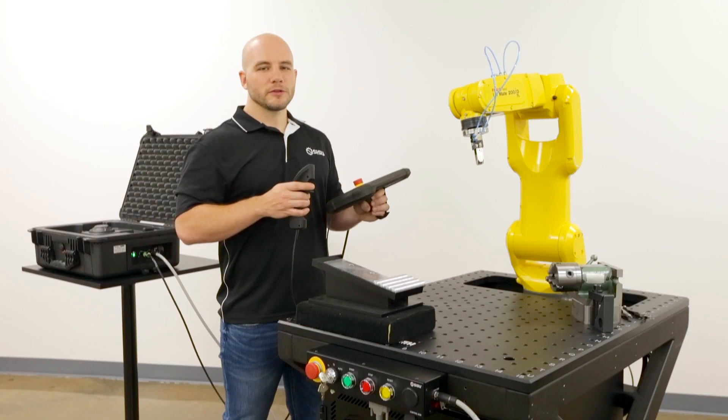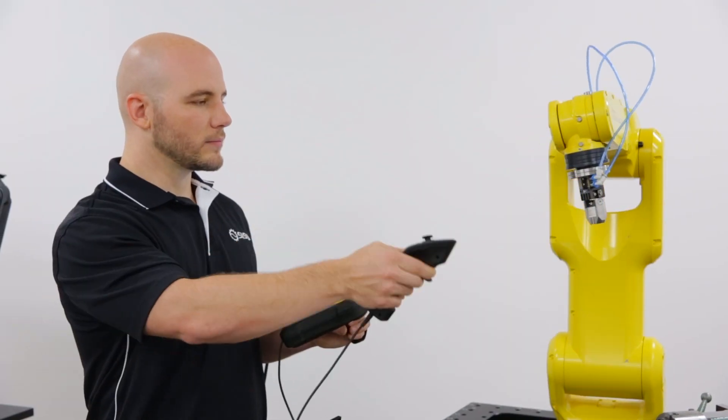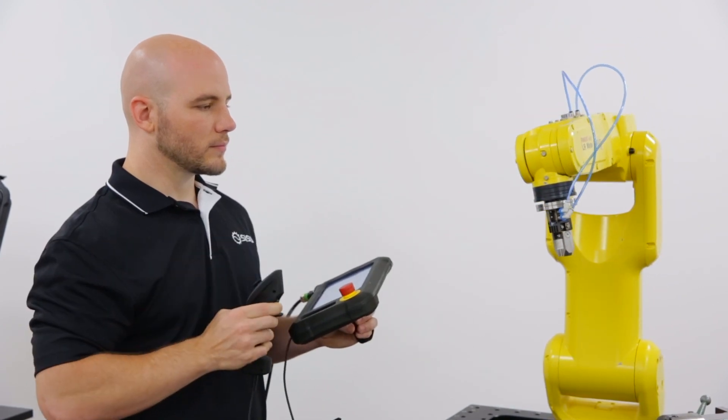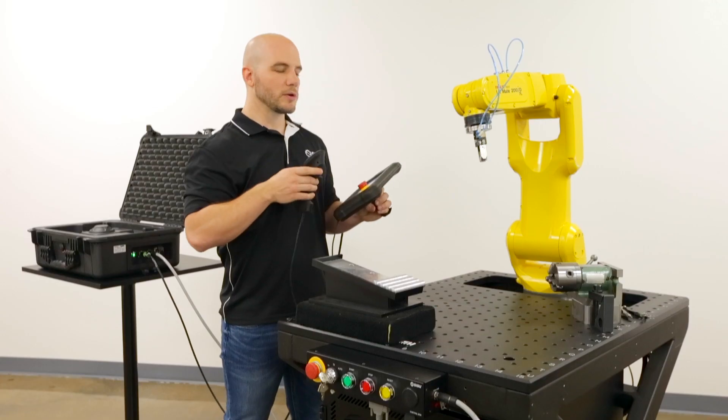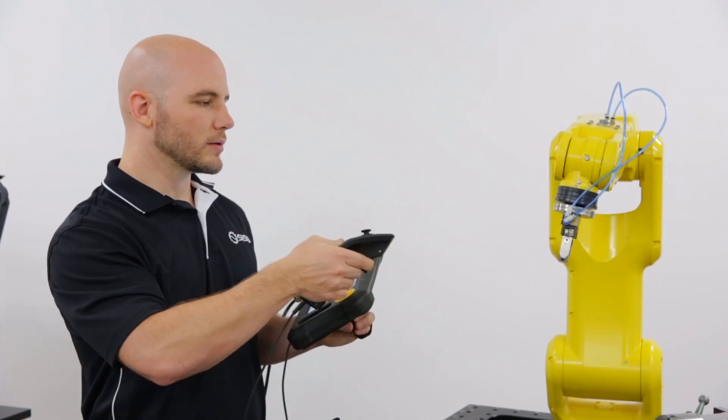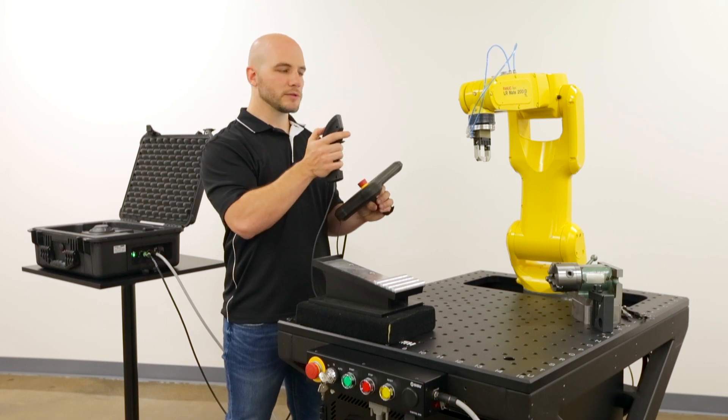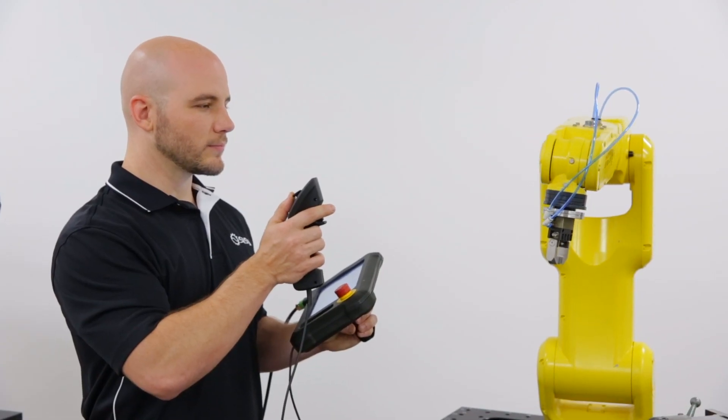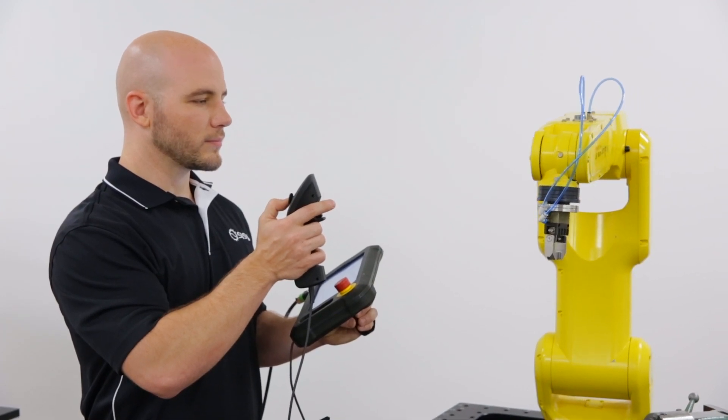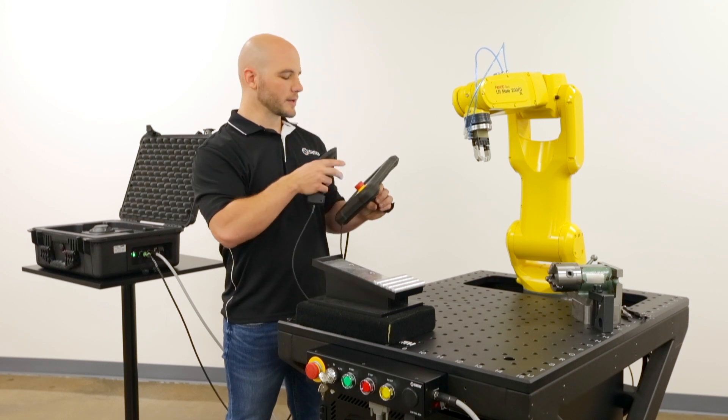The system includes a host of useful movement features. Translation-only mode. Rotation mode around the tool center point using the trigger. Rotation mode using the joystick. And single-axis rotation.